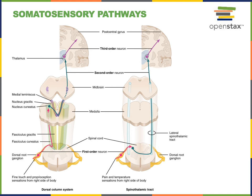The second order neuron will cross the midline, enabling information from the left half of the body to be sent to the right half of the brain, and information from the right half of the body to be sent to the left half of the brain. The second order neuron will always form a synapse in the thalamus with the third order neuron, and then the third order neuron will form a synapse with neurons in the postcentral gyrus of the parietal lobe in the primary somatosensory cortex.